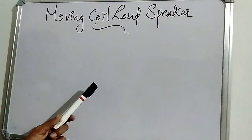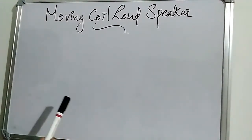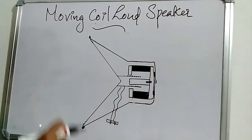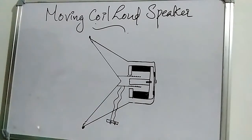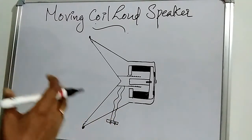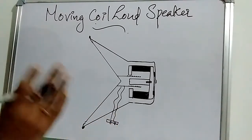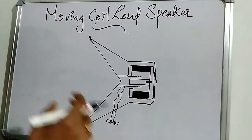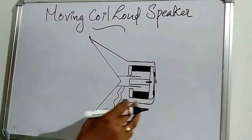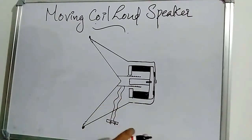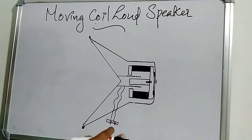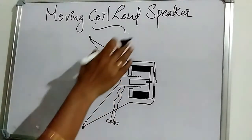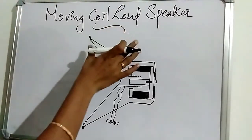We are going to discuss the moving coil loudspeaker. A loudspeaker is a device that reproduces sound in various audiovisual instruments such as radio, television, tape recorders, etc. So, the loudspeaker is a sound-reproducing device used in audiovisual equipment.